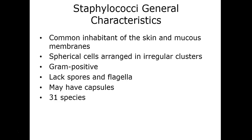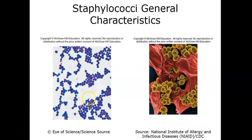Some staphylococci have the ability to produce capsules as a protective agent from phagocytosis — resisting those white blood cells, macrophages, and neutrophils from being able to ingest and destroy them. Here's an overall picture showing these circular cells in clusters or groups. You'll notice that gram-staining wise they're purple, indicating the gram-positive reaction.